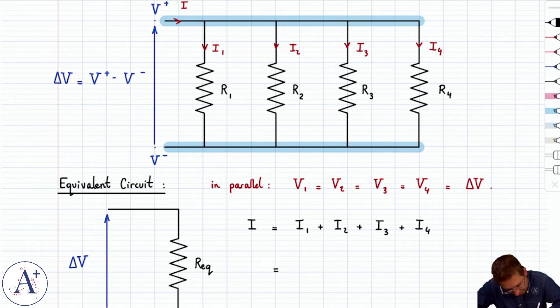I can write that V1 divided by R1 is I1, and then V2 divided by R2 is I2, and so on and so forth. V3 over R3 plus V4 over R4.